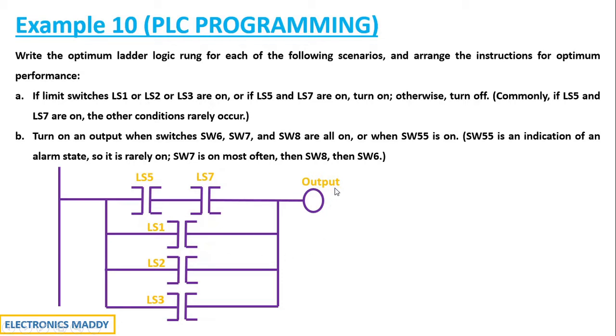What happens is that with respect to the logic, when you build this program and dump it in the controller, it initially checks for LS5 and LS7. It goes rung by rung. The first rung it checks, if both of them are high, automatically the output will be high. It doesn't require to check even LS1, LS2 and LS3. It doesn't have to check these conditions.